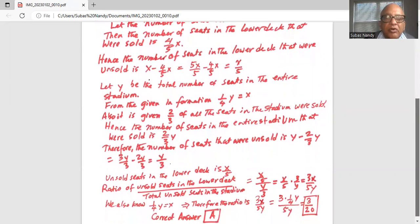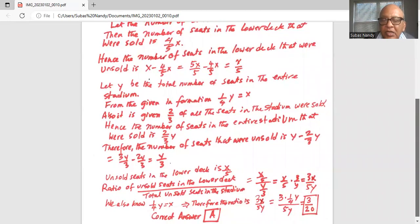We also know one-fourth y is equal to x. So instead of x in the numerator for three x we will substitute for x one-fourth y, which is three times one-fourth y divided by five y. So three divided by four times five is 20.